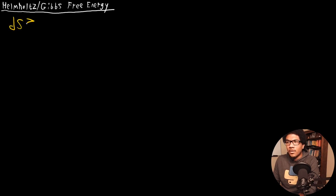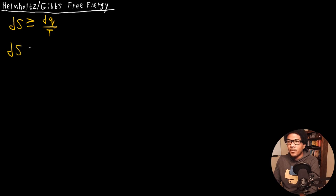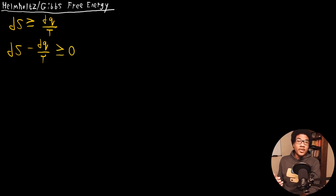We're going to introduce the Helmholtz and Gibbs free energies. The starting point for understanding these free energies begins with the Clausius inequality. We can rewrite the Clausius inequality as negative DQ over T, and we know that this is going to be greater than or equal to zero.